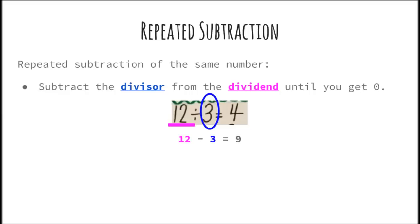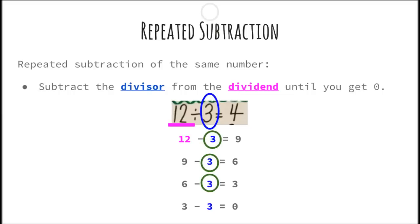The first problem that you would do is 12 minus 3 equals 9. The difference is 9, so you take 9 for the next problem: 9 minus 3 equals 6. Then 6 minus 3 equals 3. Then 3 minus 3 equals 0. Then we start counting how many times did we divide into 3: 1, 2, 3, 4. And that's how you got your quotient of 4.